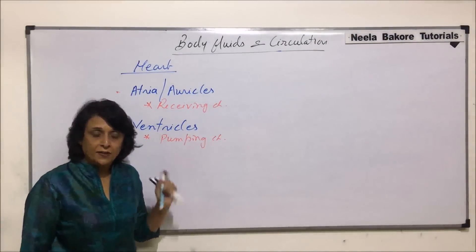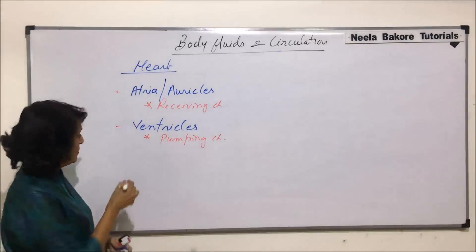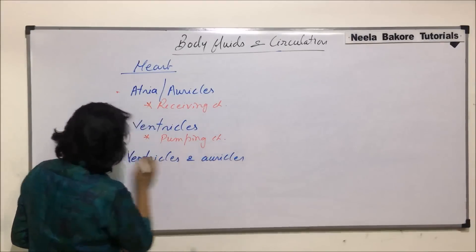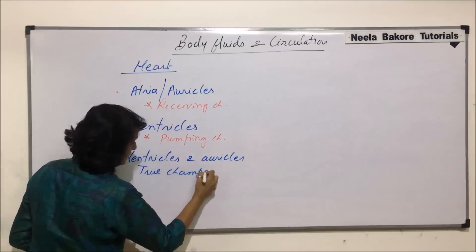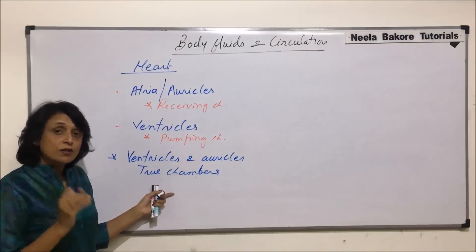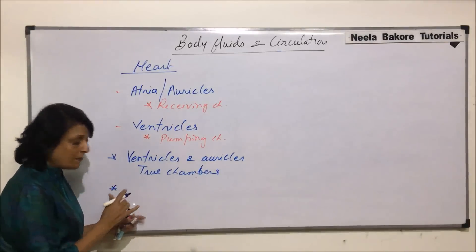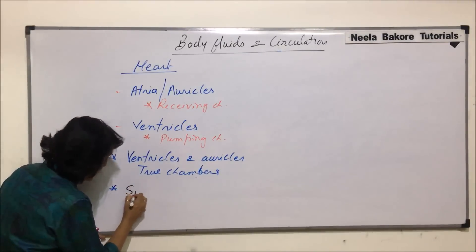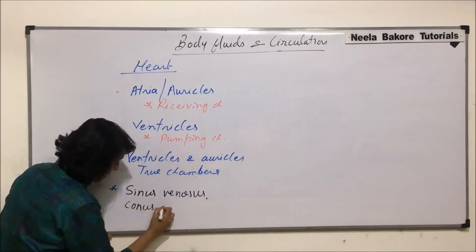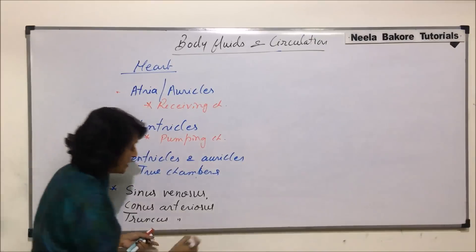Auricles or atria receive the blood; ventricles pump the blood. These two compartments — auricles and ventricles — are known as the main chambers, or true chambers, or primary chambers. There are also some accessory compartments: sinus venosus, conus arteriosus, truncus arteriosus, and bulbus arteriosus.